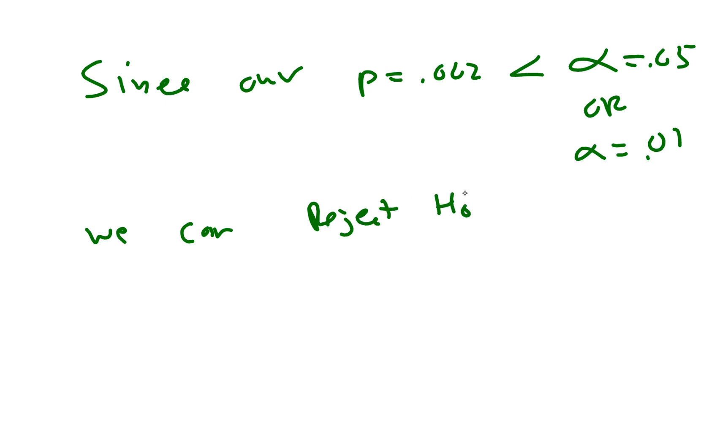So how are we going to finish this? We're going to say something like: since our p-value, which equals 0.002, is definitely less than α equals 0.05 or even α equals 0.01, which are two popular alpha levels, we can reject H₀ in favor of H_a.